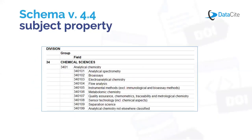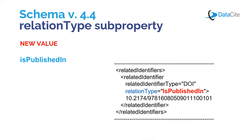This is the other change in schema 4.4. It's the addition of a new relation type value 'is published in'. The relation type is a subproperty of the existing related identifier property 12 and the new related item property. With this new relation type, you are able to refer to the container or series in which the described object is published — we consider the series or other containers like journal or book to be a related item.